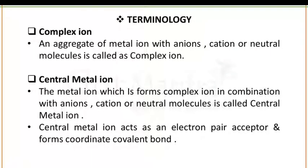Now there are a few terminologies related to coordination compounds. Number one is complex ion — an aggregate of a metal ion with anions, cations, or neutral molecules is known as a complex ion. When a compound has all types of metal ions — it could be anion, cation, or neutral molecule — then this is known as a complex ion or complex compound.